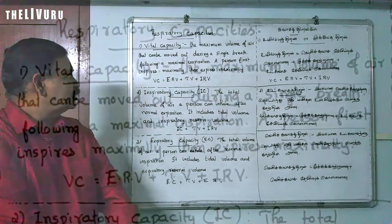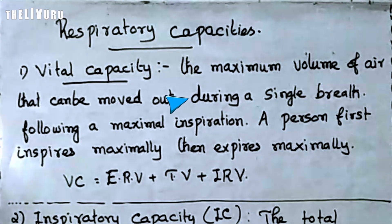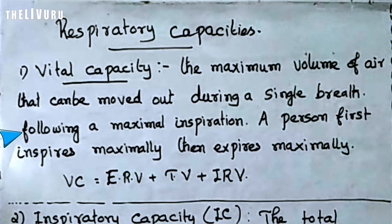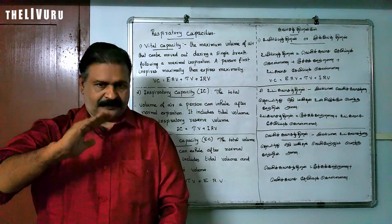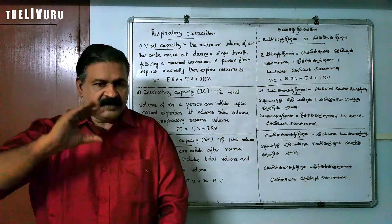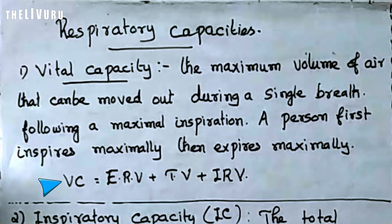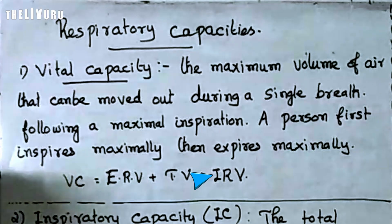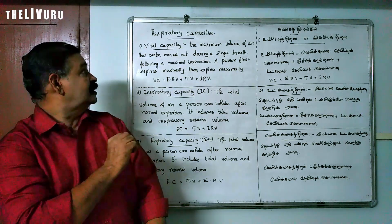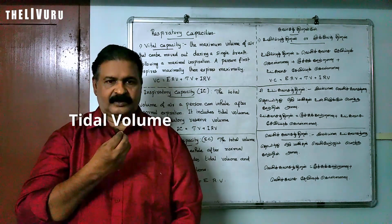The volume of air that can be moved out during a single breath following a maximum inspiration. The vital capacity is equal to expiratory reserve volume plus tidal volume plus inspiratory reserve volume.